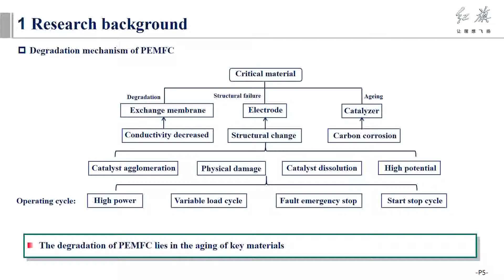The direct cost of performance degradation of PEM fuel cell is the pollution and degradation of critical materials, including the electrode membrane and electrocatalyst, resulting in the decrease of proton conductivity of the membrane. The change of electrochemical structure results in the degradation of battery performance.